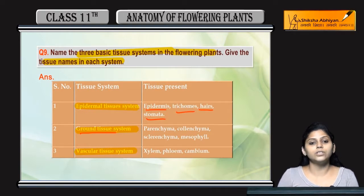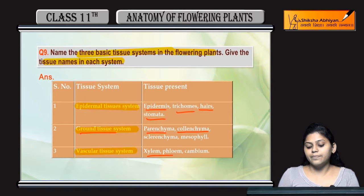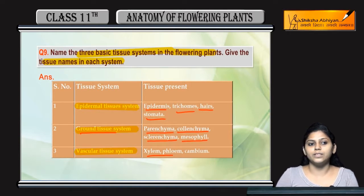Next is the ground tissue system, which contains parenchyma, colenchyma, sclerenchyma, and mesophyll.